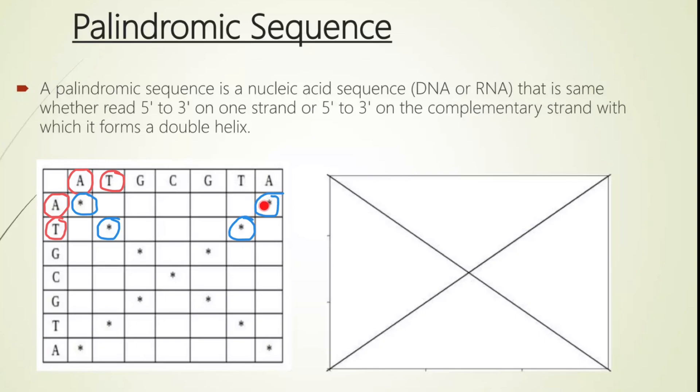But what does it mean when we have, instead of just one diagonal line, two diagonal lines going in different directions? This basically means that we have a palindromic sequence. Take a look. This is going to be sequence ATGC, and here is going to be another sequence. As you see, they do not overlap. So let me use a different color. But this is going to be the same sequence: A, T, G, C.